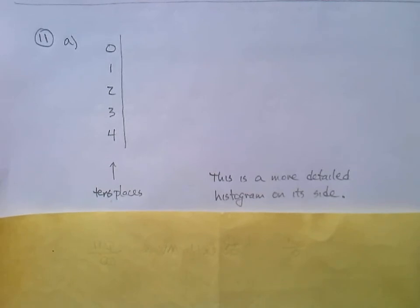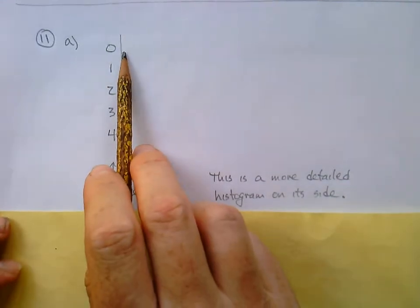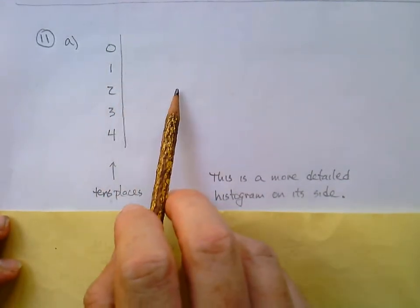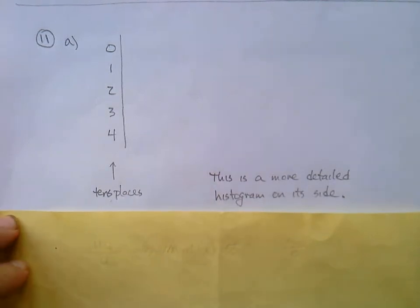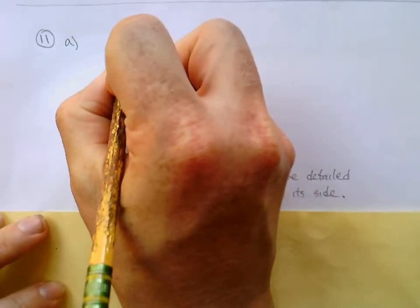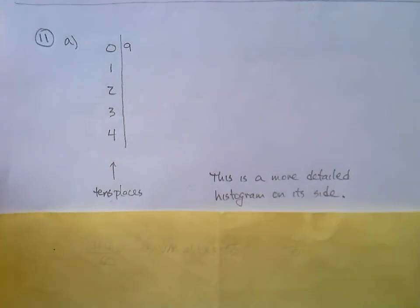You can ignore my note here for now. These are the tens places of the different data values. So 0 in the tens place, and then a 1, a 2, a 3, a 4. And now what we're going to do, we're just going to go through that list of numbers. And we're going to write the ones places. And the ones places are going to stem out from the tens places on the other side of the line. So we'll begin